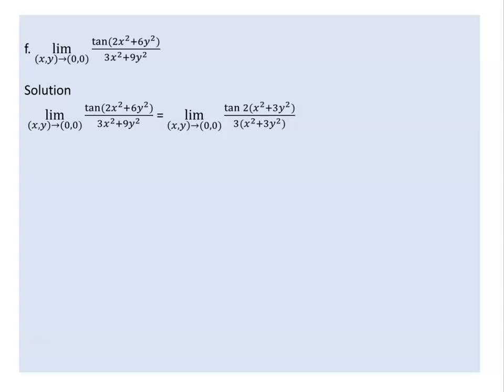Looking at 2x² + 6y², we can see that 2 is the common factor. Factoring out 2 from the numerator gives 2(x² + 3y²). Then we have x² + 3y² divided by x² + 3y².